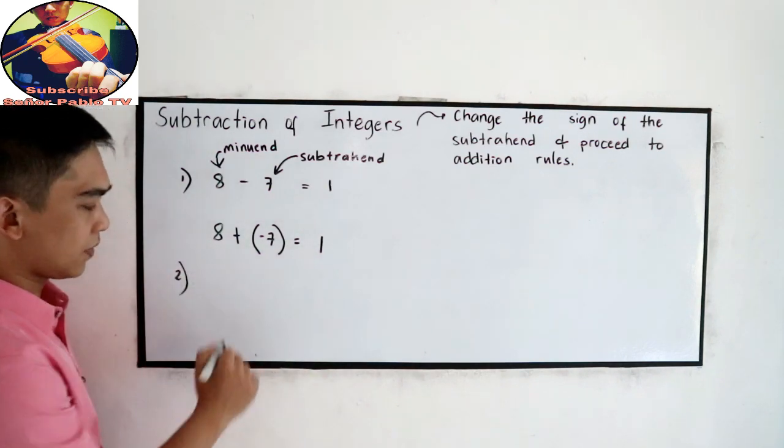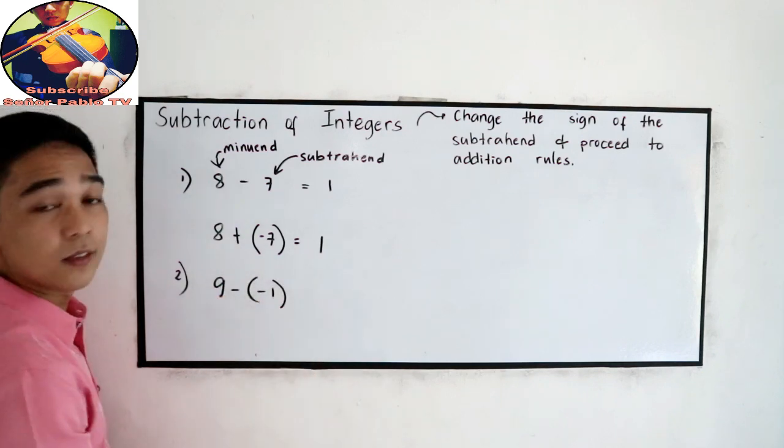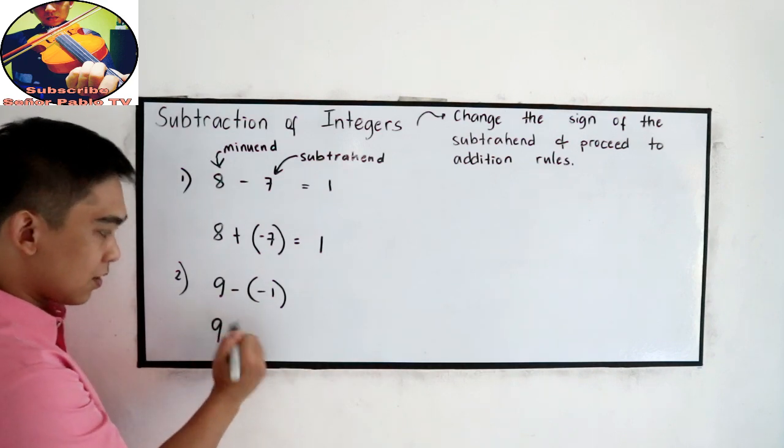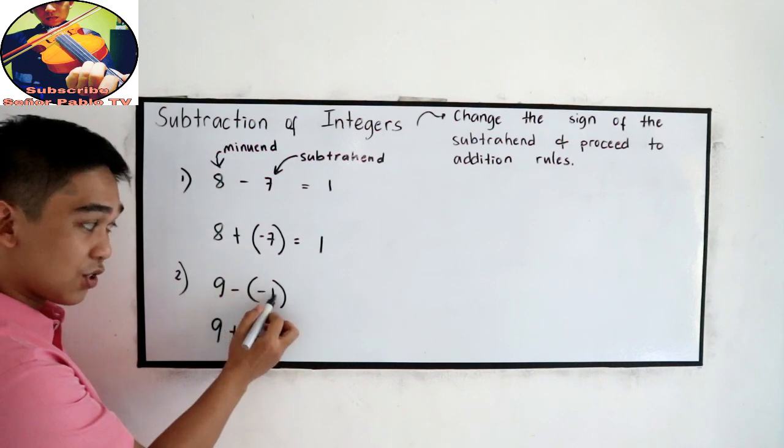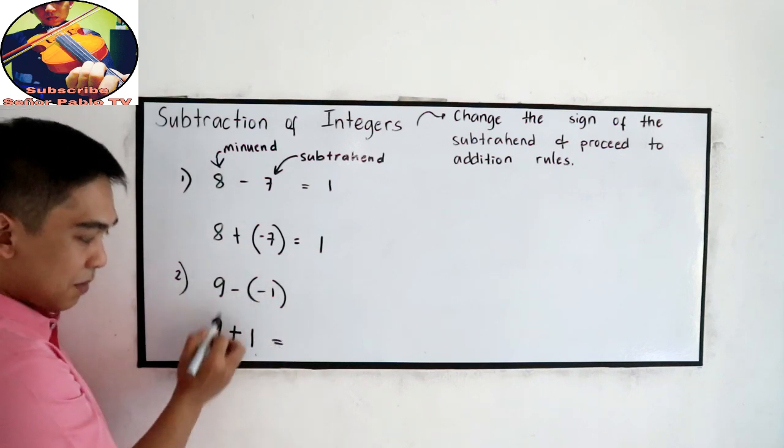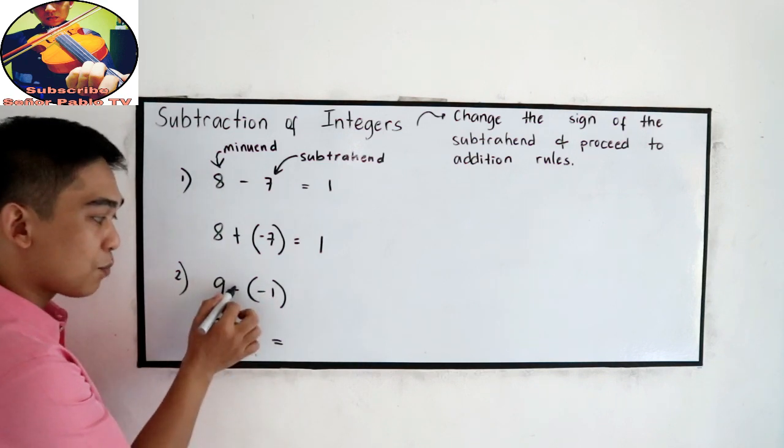Number 2. 9 minus negative 1. Copy the minuend, change the sign. So it will become positive 1. Then proceed to addition.